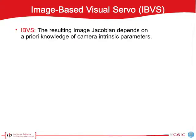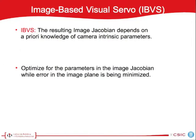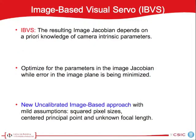However, we have to compute the so-called image Jacobian that relates velocities from the image plane to the camera frame. In image-based visual servoing, the resulting image Jacobian depends on a priori knowledge of camera intrinsic parameters. To avoid this dependency, we can optimize it while the error in the image plane is being minimized. Here we present our uncalibrated image-based visual servo approach with mild assumptions such as square pixel sizes, centered principal point, and unknown focal length. To introduce our image Jacobian, we briefly revisit the underlying method: the uncalibrated perspective-n-point camera pose determination, also known as UPnP.